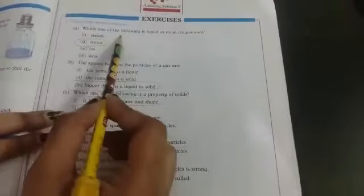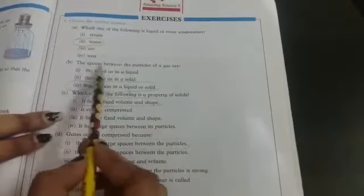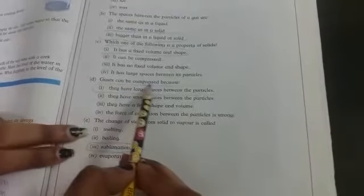Question number three. You have to choose the correct answer. Which one of the following is liquid at room temperature? Water. The spaces between the particles of gas are bigger than in a liquid or solid. Which one of the following is a property of solid? It has a fixed volume and shape. Gases can be compressed because they have large spaces between the particles. The change of state from solid to vapor is called sublimation.